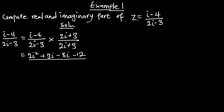For the denominator, multiplying through gives us 4i squared, plus 6i, minus 6i, and negative 9. So we can further reduce this to get our final answer.